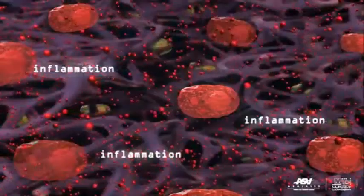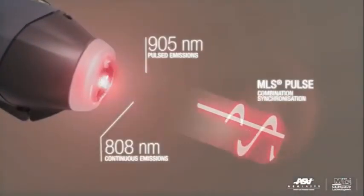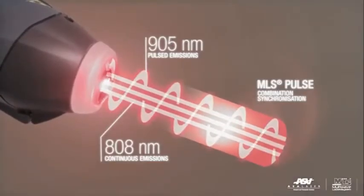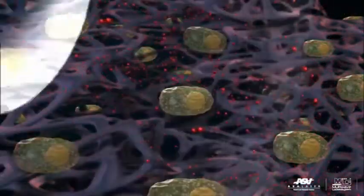Our MLS laser uses two wavelengths, 905 and 808, which are synchronized together to produce effects on pain, inflammation, and edema. So what does this mean?